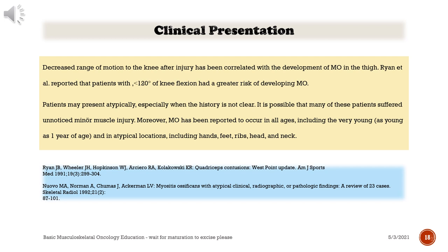Patients may present atypically, especially when the history is not clear. It is possible that many of these patients suffered unnoticed minor muscle injury. Moreover, myositis ossificans has been reported to occur in all ages, including the very young — as young as one year of age — and in atypical locations, including hands, feet, ribs, head, and neck.